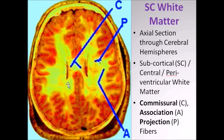For the ease of understanding, this white matter has been divided into three broad groups: the so-called commissural fibers, the projection fibers, and association fibers.